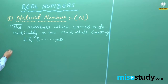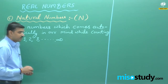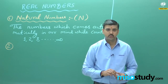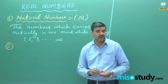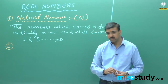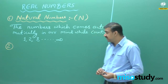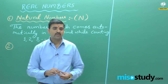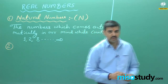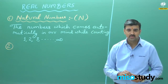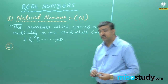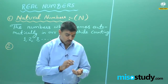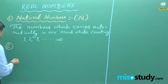Now, after that, if I add 1 plus 1, you get 2. But what about subtraction? If I subtract 3 minus 2, the answer is 1. But what about 1 minus 1? There is no such number in natural numbers. So for that we introduce a new number series — the name of that series is whole numbers.